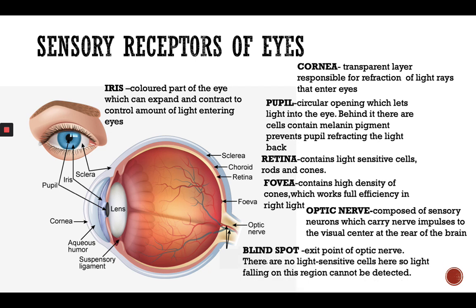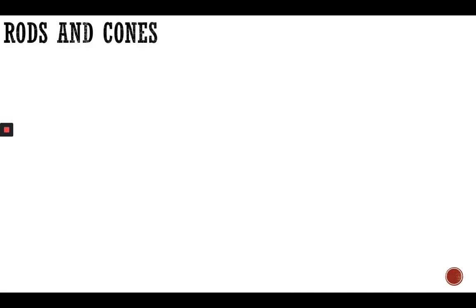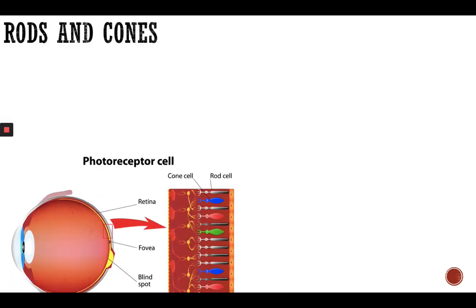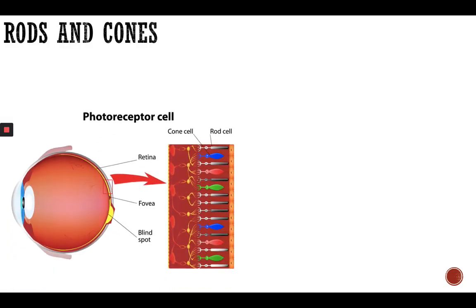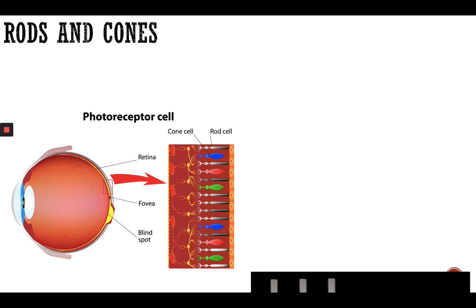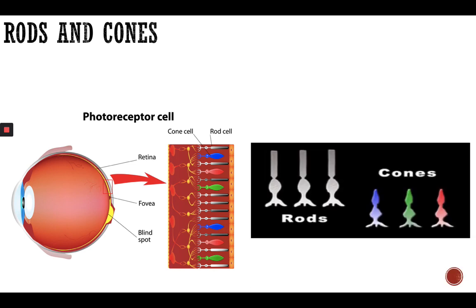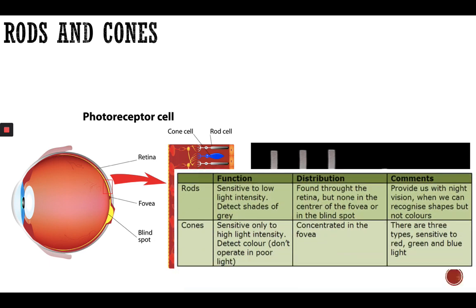The blind spot is the exit point of the optic nerve, and there are no light-sensitive cells here, so light falling on it cannot be detected. Rods and cones are the photoreceptors. Rods are responsible for vision in dim and dark light, and cones are responsible for vision in bright light.